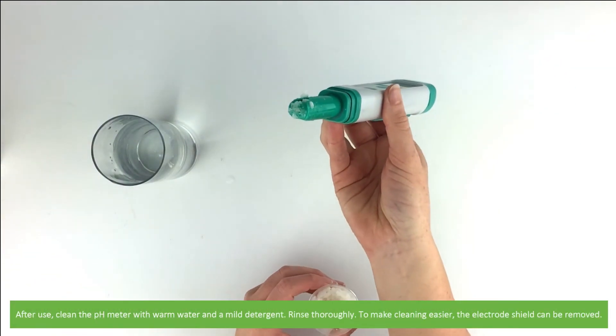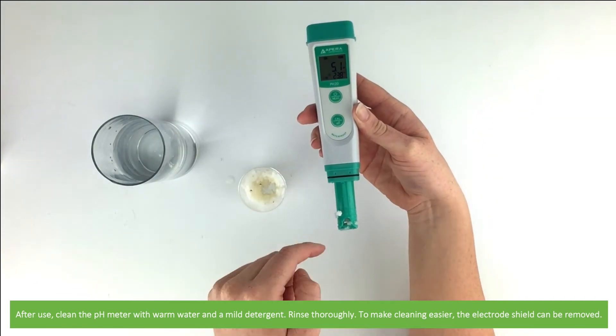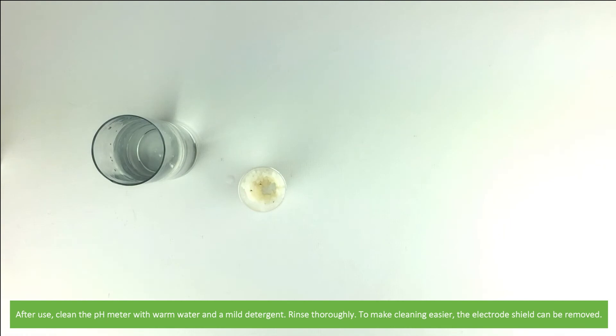After use, clean the pH meter with warm water and a mild detergent. Rinse thoroughly. To make cleaning easier, the electrode shield can be removed.